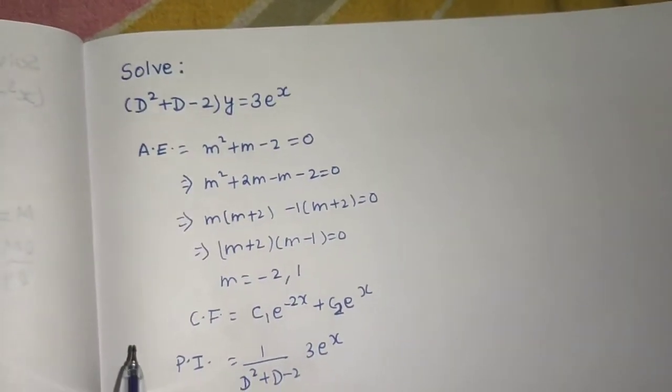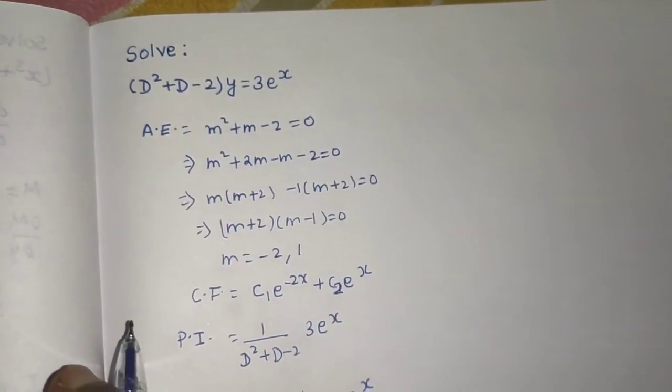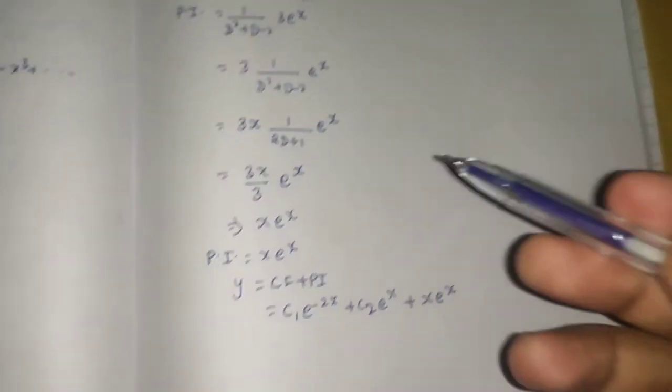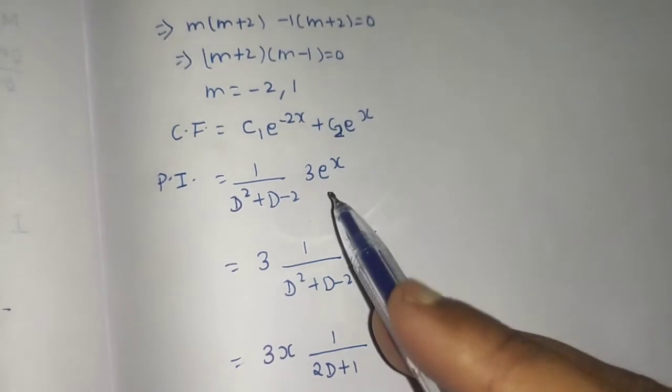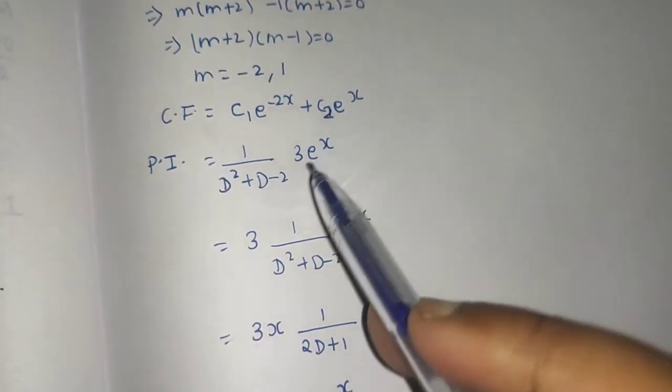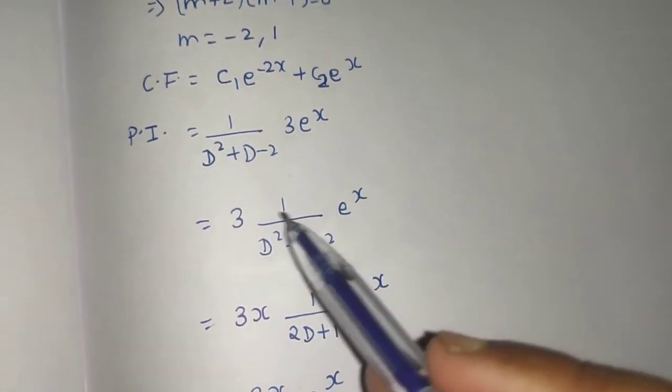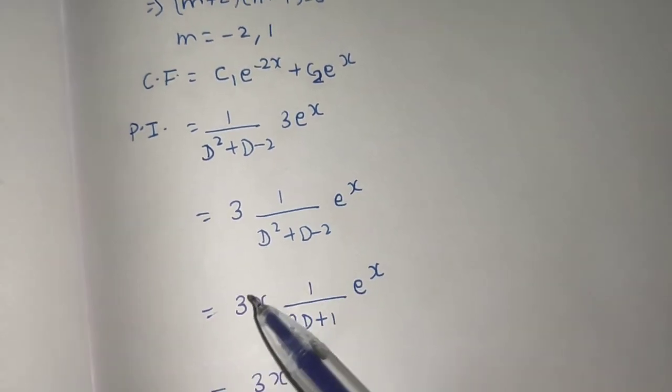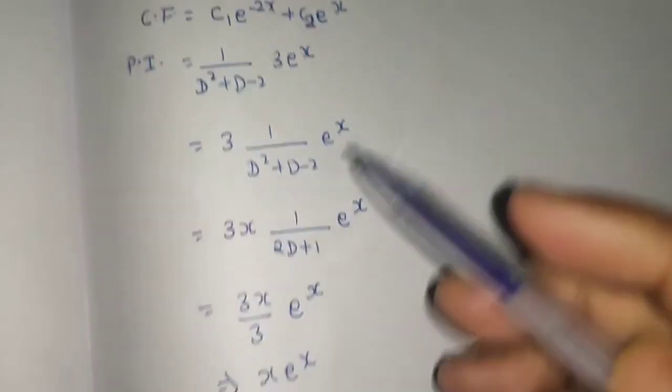Very easy question from linear differential equation with constant coefficient. First find complementary function then the pi. Just the rule replace this d by a, a here was 1. Replace that by 1, denominator was getting 0, so I differentiated it once and multiplied on the same step by x.